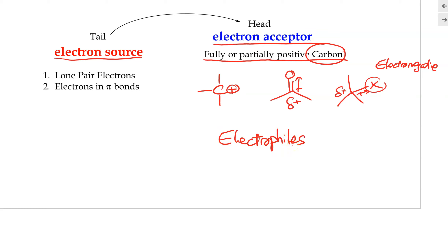The electron-rich substance where electrons would be donated out in a chemical reaction — the electron source — is termed the nucleophile. In nearly every chapter of organic reactions discussed later, it involves these types of reactions where electrons start moving from the nucleophile and are donated into the electrophile.